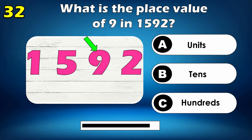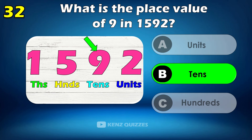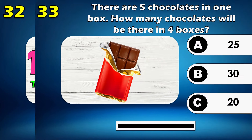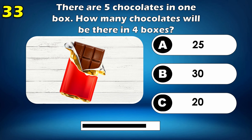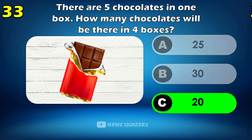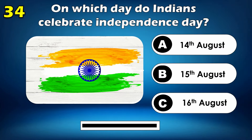What is the place value of 9 in 1592? 90. There are 5 chocolates in 1 box, how many chocolates will be there in 4 boxes? 20.